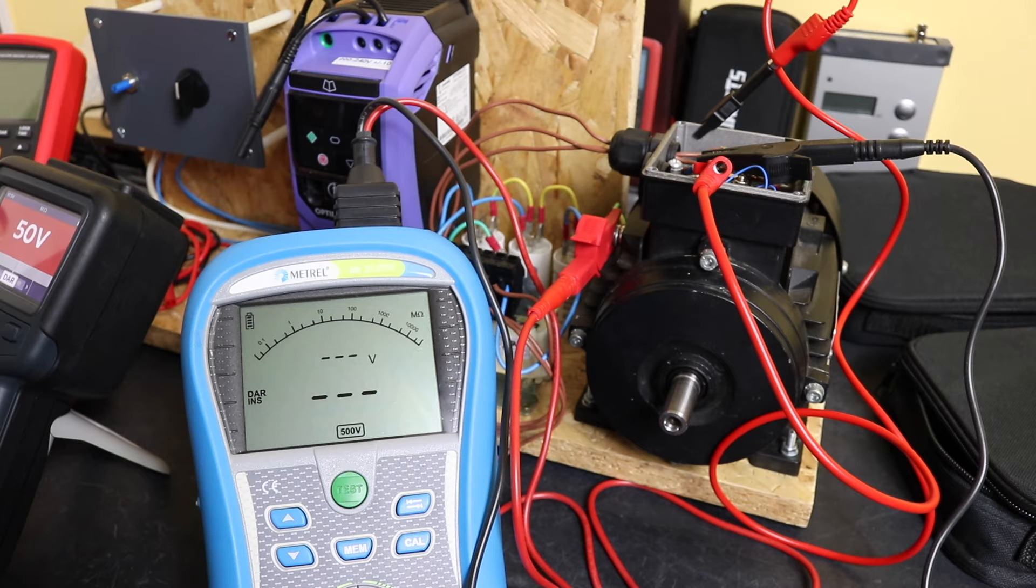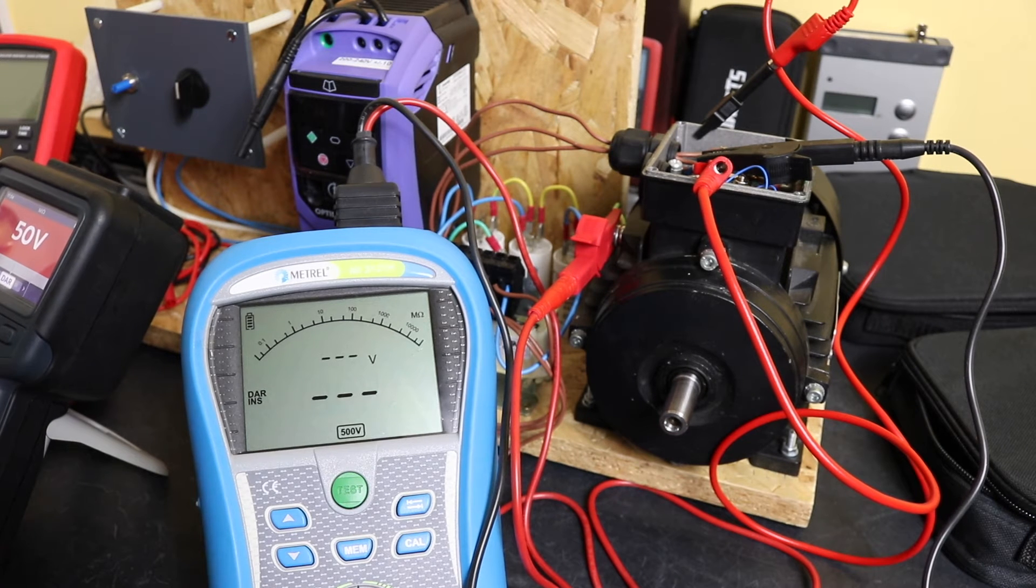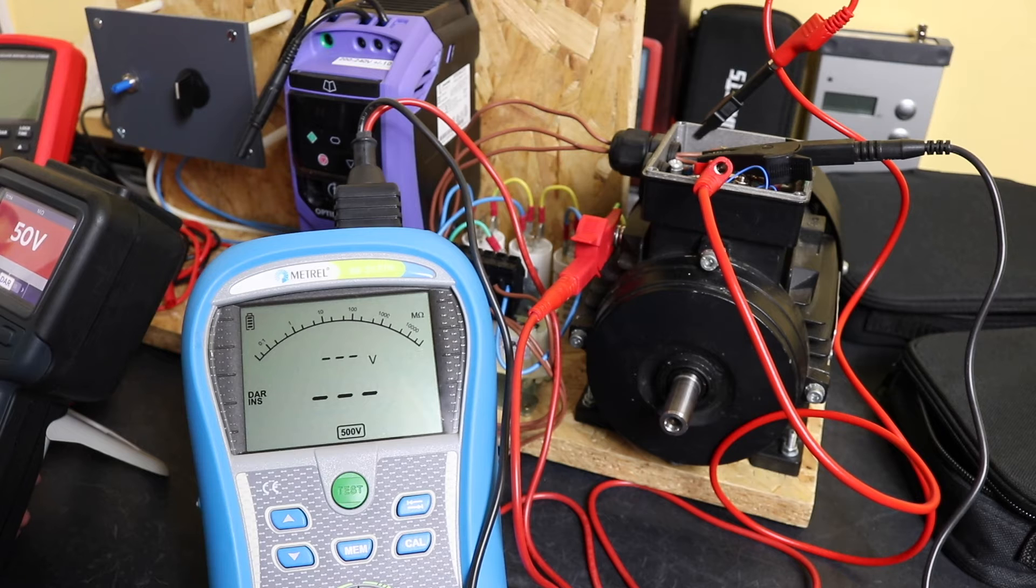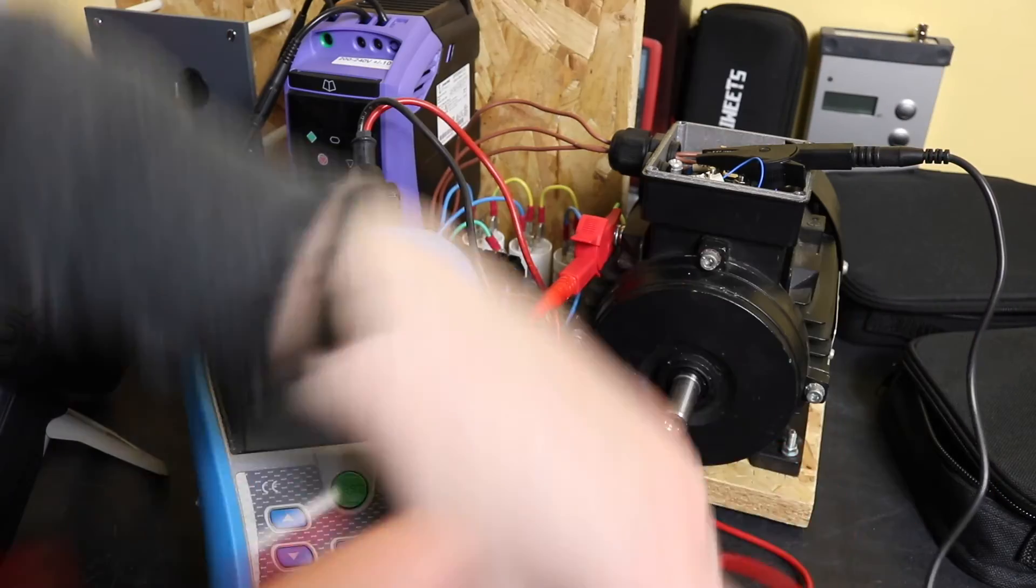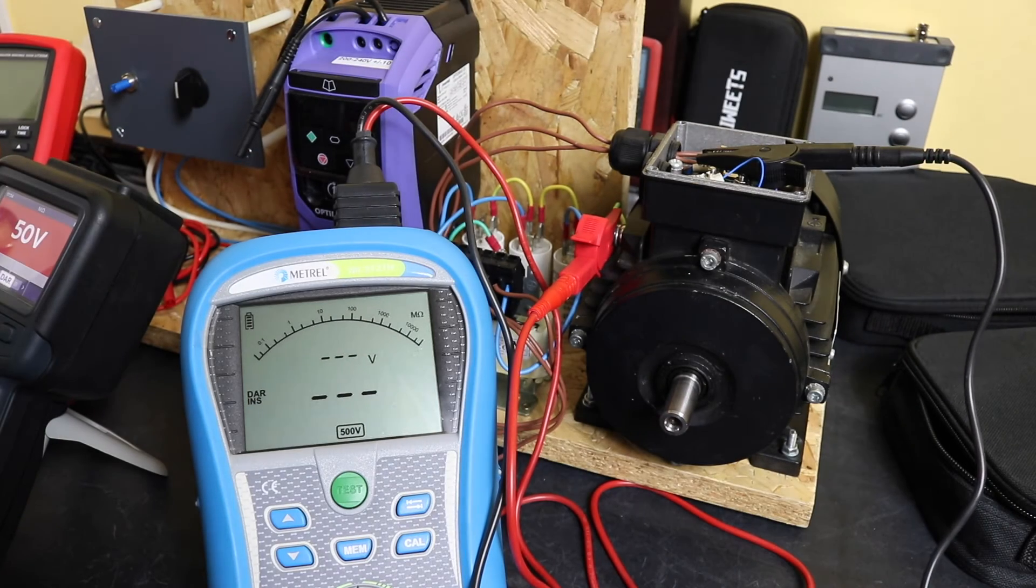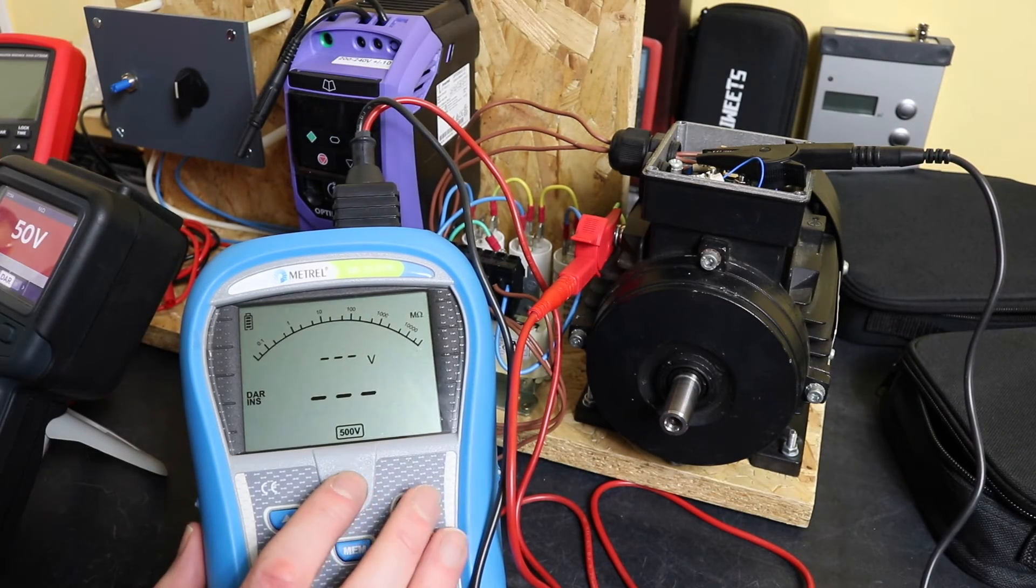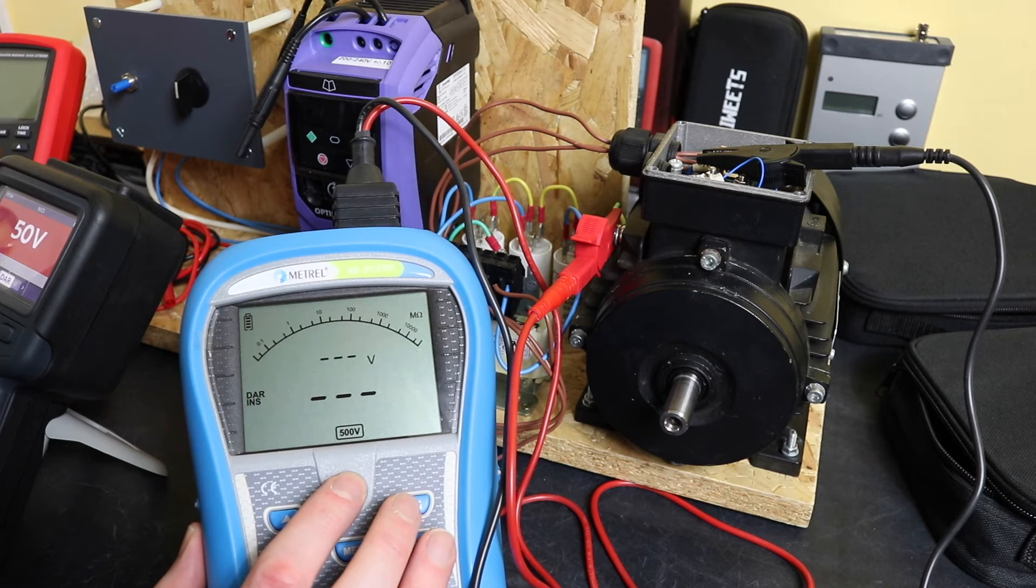We are with another unit that I'm going to have to manually time and then do a calculation. This is the Metrel MI3121H. We are set up for 500 volts. Let's remove the link, otherwise we're going to have problems. We can set this one off as well.